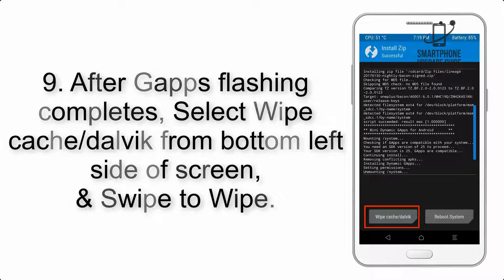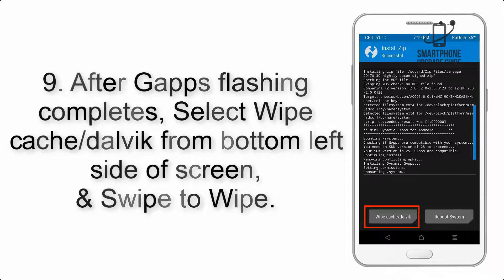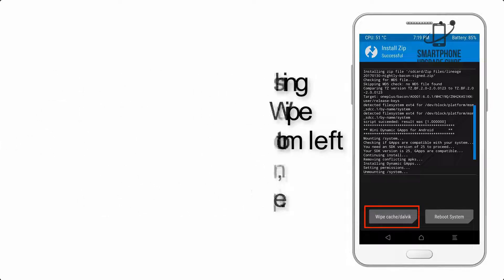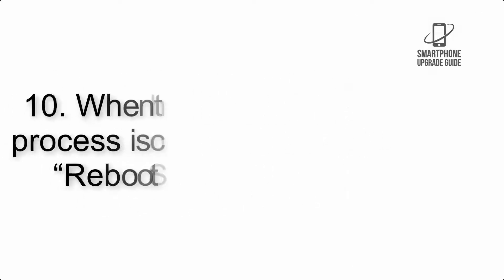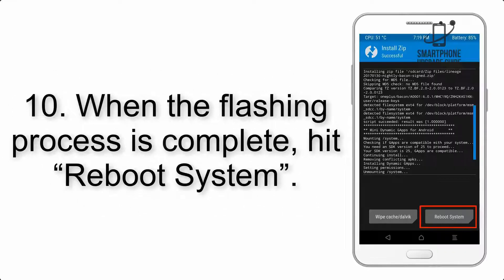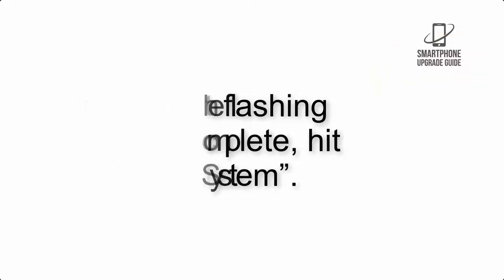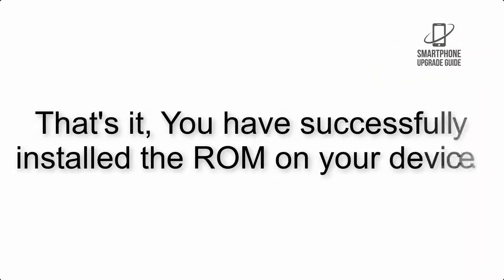Step 9: After GApps flashing completes, select Wipe Cache and Dalvik from the bottom left side of the screen and swipe to wipe. Step 10: When the flashing process is complete, hit Reboot System. That's it — you have successfully installed the ROM on your device.